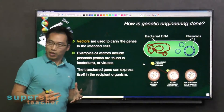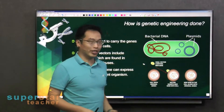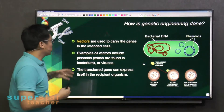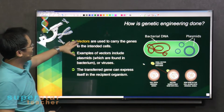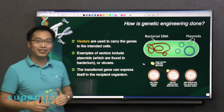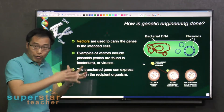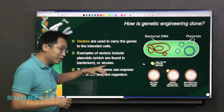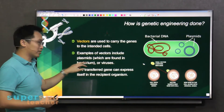Having seen that little clip, we are going to discuss how genetic engineering is actually done. You remember I introduced the word 'vectors' to you. Vectors are used to carry genes to the intended cells, and they can come in various forms. Remember, it was a virus in that clip we showed earlier — a virus can be a vector. But other vectors can also include something called plasmids.